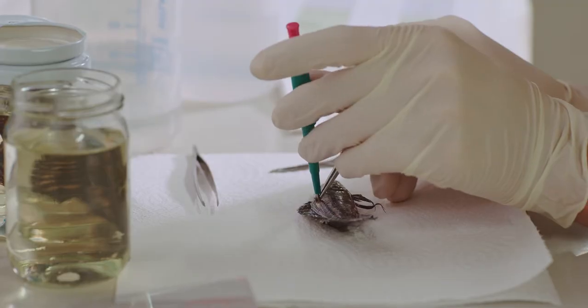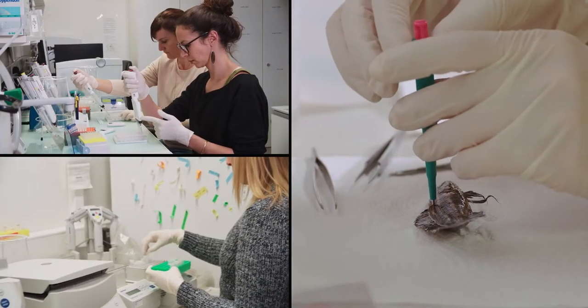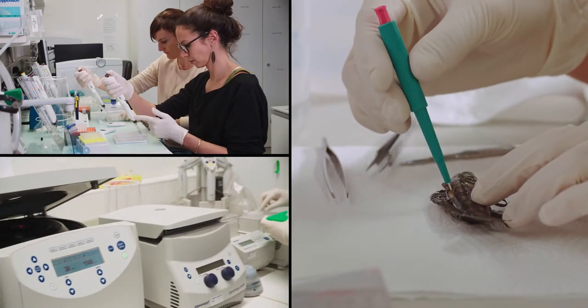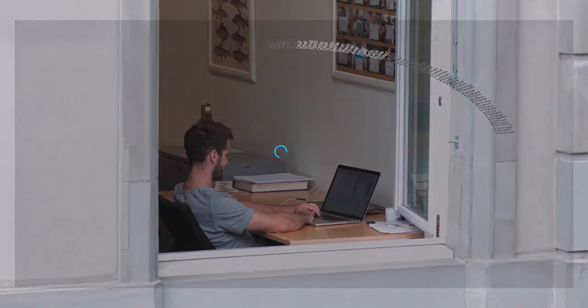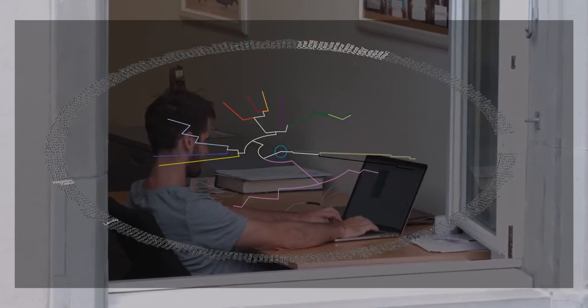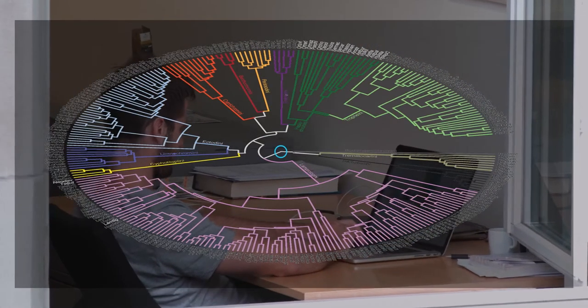In order to reconstruct the evolution of cichlid fishes in Lake Tanganyika, we sequenced the genomes of two representatives of every single species in that lake. These genomic data allowed us to resolve the complete timeline of cichlid evolution in Lake Tanganyika in a phylogenetic tree.